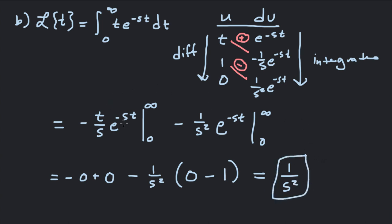Be very careful when plugging in these bounds. When you plug in infinity, you're really taking the limit of the function as t goes to infinity. When you plug in t = 0 for the term t · e^(-st), you get zero. For the term e^(-st): as t → ∞, e^(-∞) = 0; at t = 0, e^0 = 1. So the Laplace transform of t is 1/s².